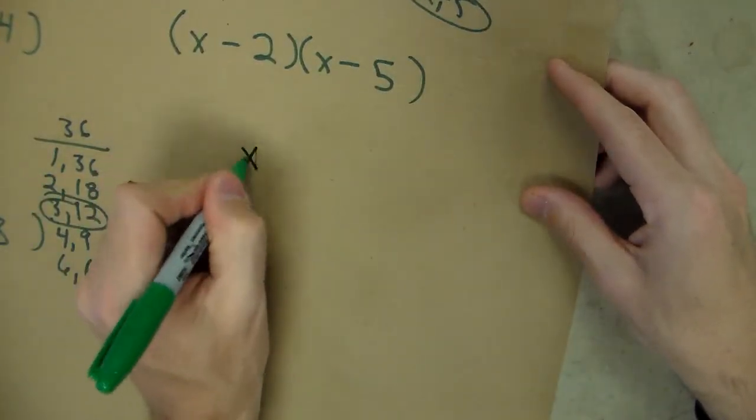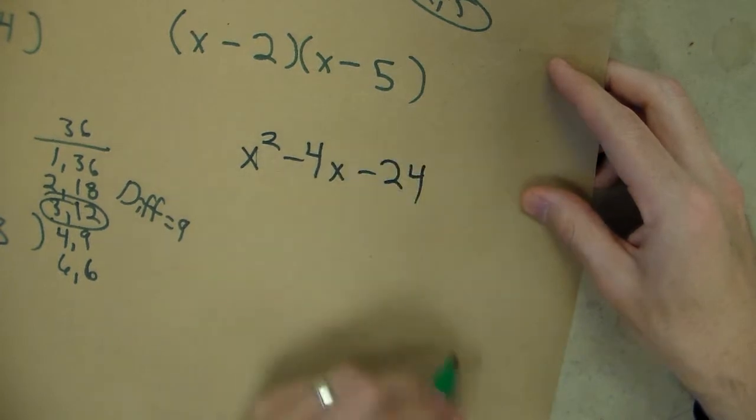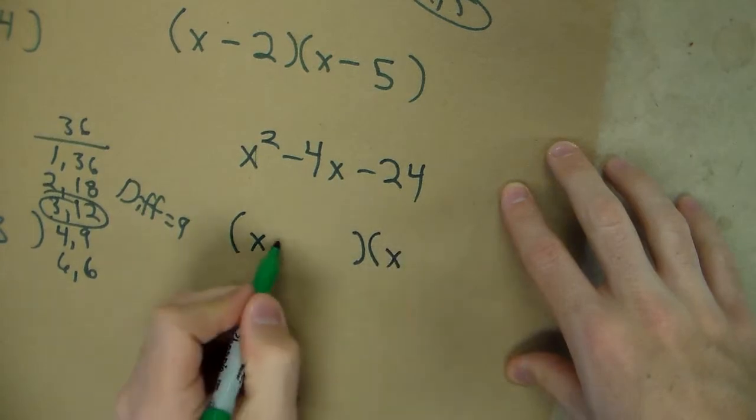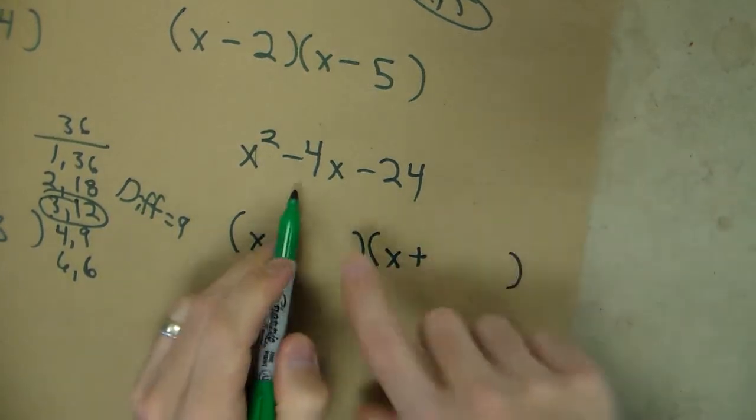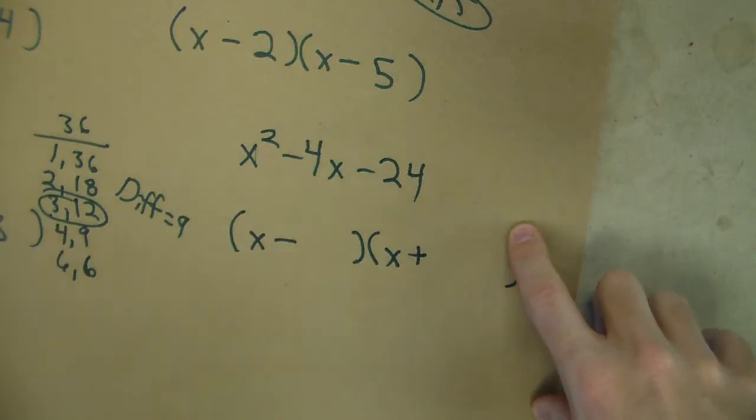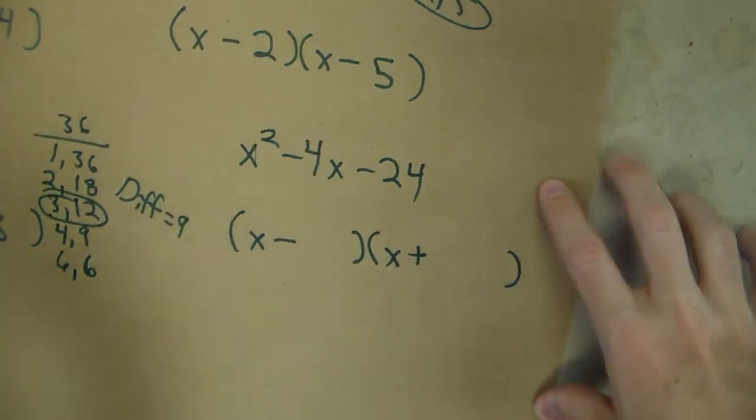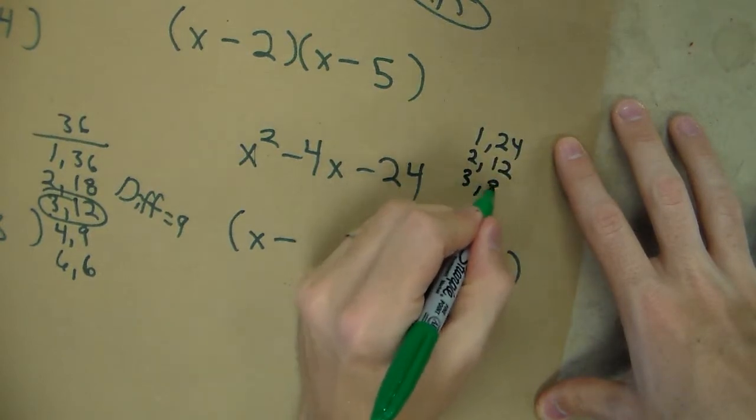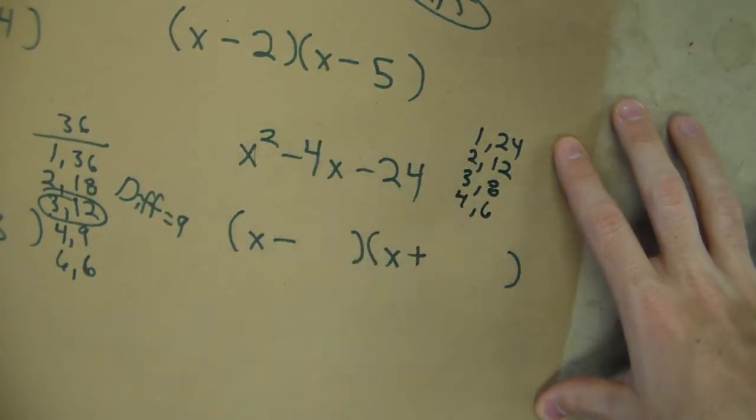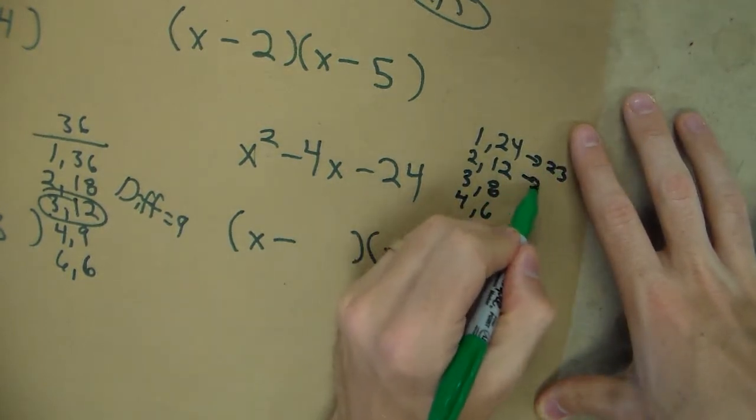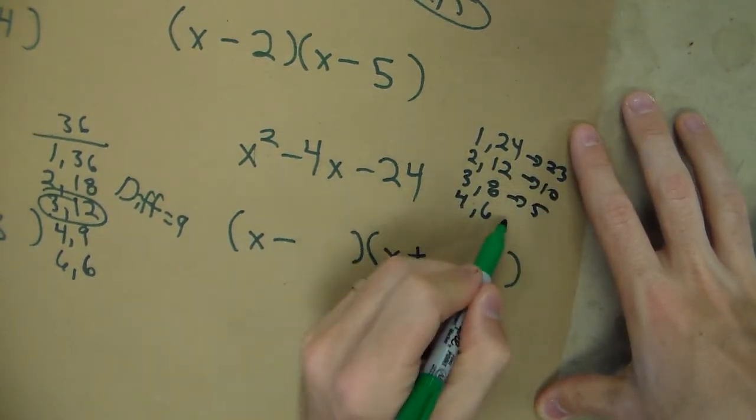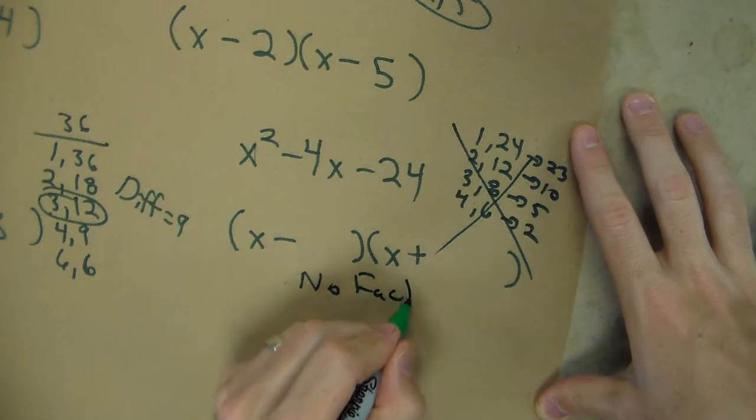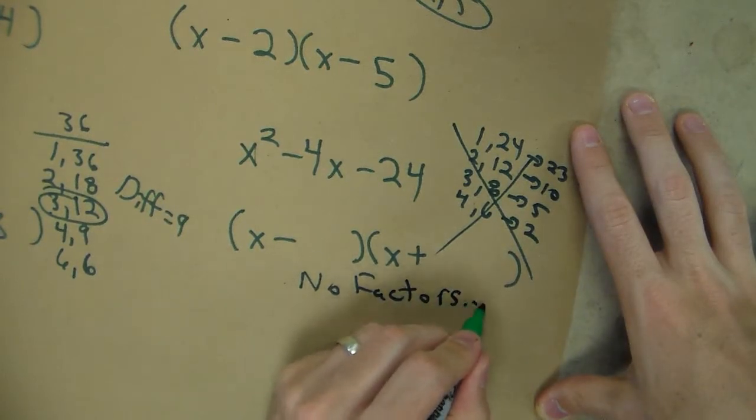Let's look at x² - 4x - 24. They multiply to be a negative, so one's negative, one's positive, and I have a negative 4. So what factors do I have of 24 that have a difference of 4? Well, 1 and 24, 2 and 12, 3 and 8, 4 and 6. I got a difference of 23, difference of 10, 5, 2. None of them are going to work. So we're going to write no factors for now.